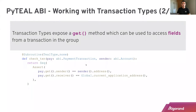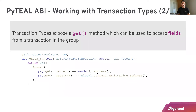We can do more, because for each transaction we can access the fields of the transaction and do some cross checks between the application call and the transaction or other arguments we are passing to a method. For example, here we have a group of two transactions: one payment transaction as the first, and the second is the application call to this method. This application call is passing as an argument the payment transaction and an ABI account which should be the sender of that payment transaction. We are asserting that in the logic of the method — checking that the payment transaction's sender matches the sender passed as argument, and also checking that the receiver of that payment is the current application address of that smart contract.